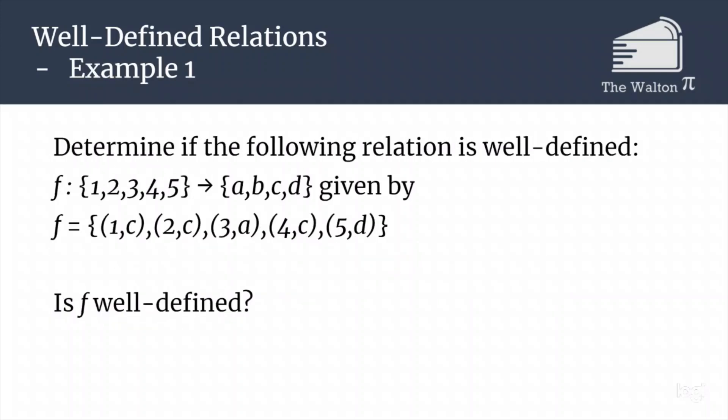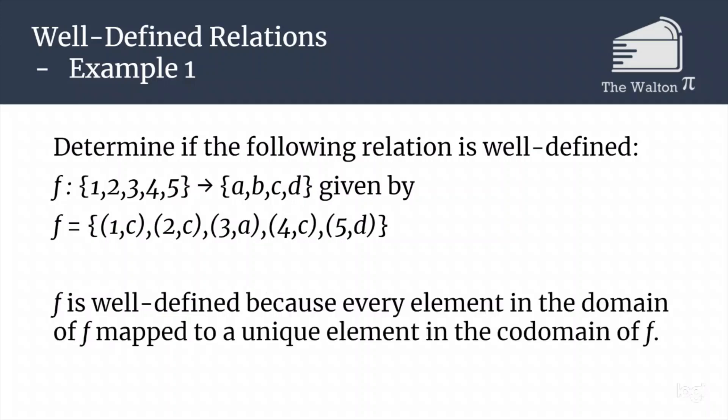With this example, let's try and figure out: is this well-defined? Take a second, look at it and try and see if you can figure that out. Hopefully you were able to tell that this is going to be a well-defined relation because every element in the domain of f mapped to a unique element in the codomain of f. It doesn't matter that three of the elements in the set {1, 2, 3, 4, 5} all mapped to the same element in our codomain — where we have the pairs 1c, 2c, and 4c — all that matters is that there aren't pairs like (1,c) and (1,a) where 1 was mapping to two different elements. So this is going to be a well-defined relation.